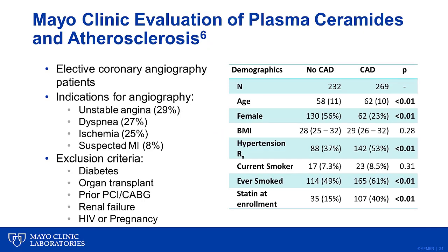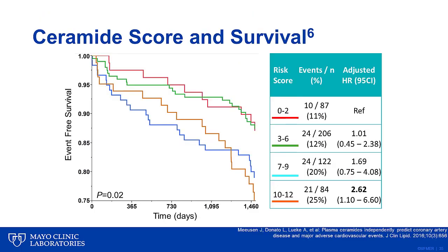At Mayo Clinic, we have validated and implemented in clinical practice the ceramide score approximately two years ago. This score consists of four ceramides, of which three are of medical interest and the fourth is used for normalization. For validation purposes, we used a cohort of patients with established coronary artery disease by coronary angiogram. A score of 0 to 2 is considered low cardiovascular atherosclerotic risk, while a score of 10 to 12 confers very high risk.